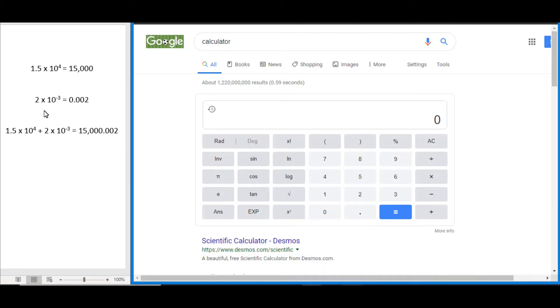If we're given numbers in scientific notation, which is a way of condensing numbers that are either really large or really small, we can enter it into this calculator using this EXP key.